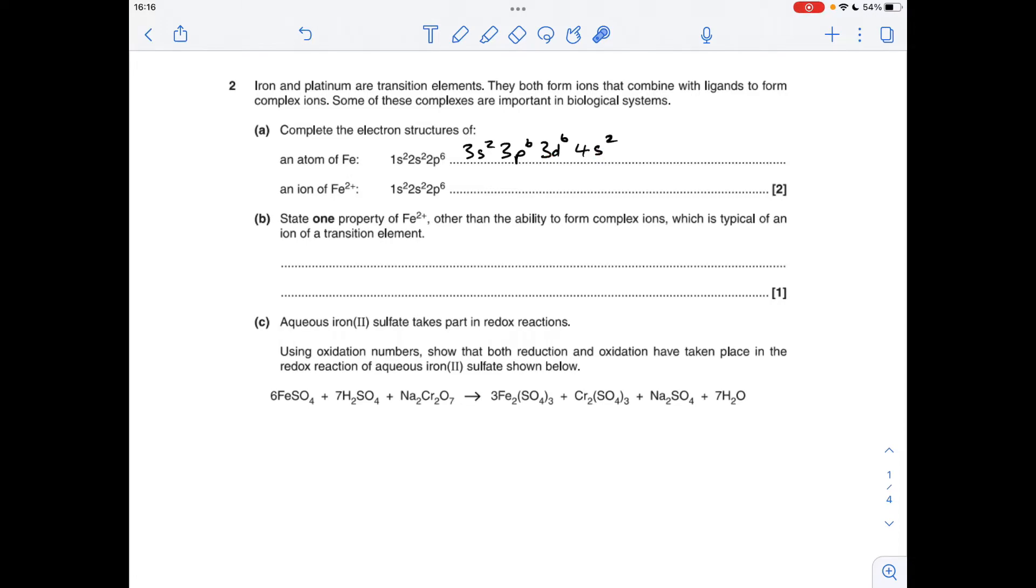The reason I've done that is because I've asked for an ion of Fe2+. These are the electrons that go out first, so you work from the outside and go back. So it's going to be 3s2, 3p6, 3d6.